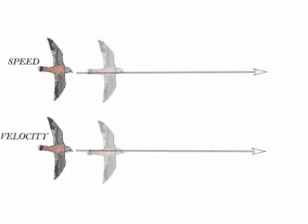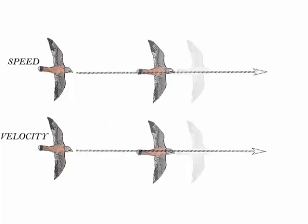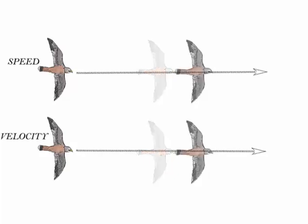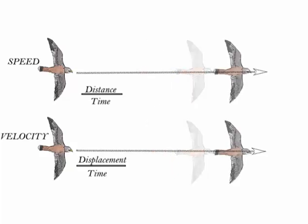For speed, this is the distance traveled by an object divided by the total time. But for velocity, this is the displacement of an object divided by the total time. Displacement is the difference in distance between the starting position and the final position of the Kestrel.